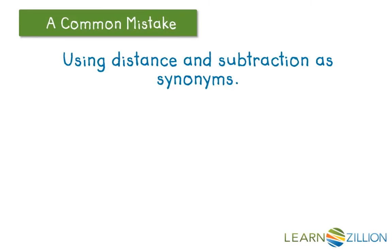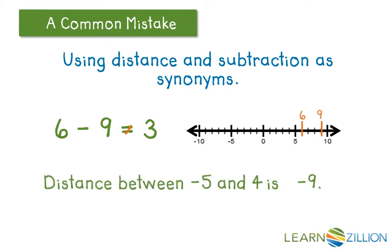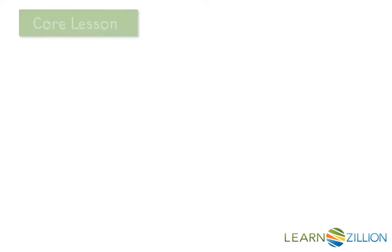One common mistake is using distance and subtraction as synonyms. For example, someone might say that positive 6 minus positive 9 equals positive 3, when in fact their distance is positive 3, but their difference is not — it's negative 3. Or someone might say the distance between negative 5 and positive 4 is negative 9. But we know that distance is always positive, so it's not negative 9. Let's take a look at some more examples on a number line.